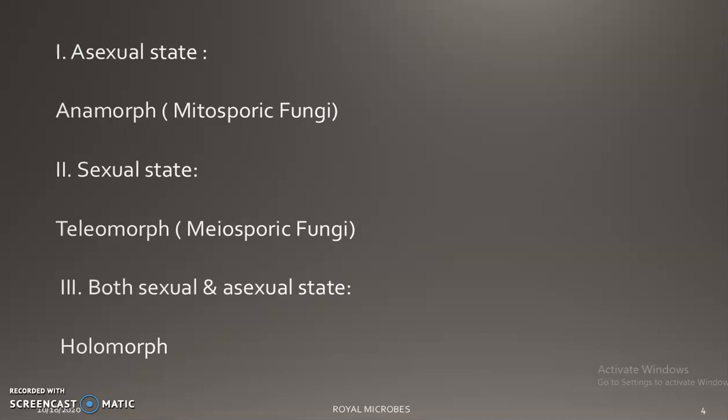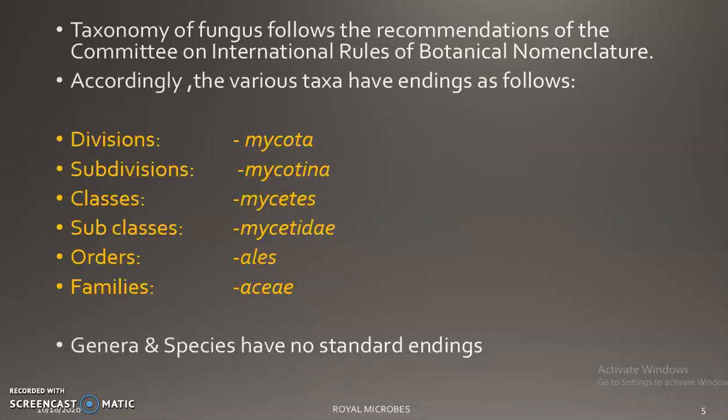Now we can see three terms: anamorph, teleomorph, and holomorph. Anamorph means mitosporic fungi — that is, the asexual state. Teleomorph, or meiosporic fungi, is the sexual state. If both sexual and asexual states are present, it is called holomorph.